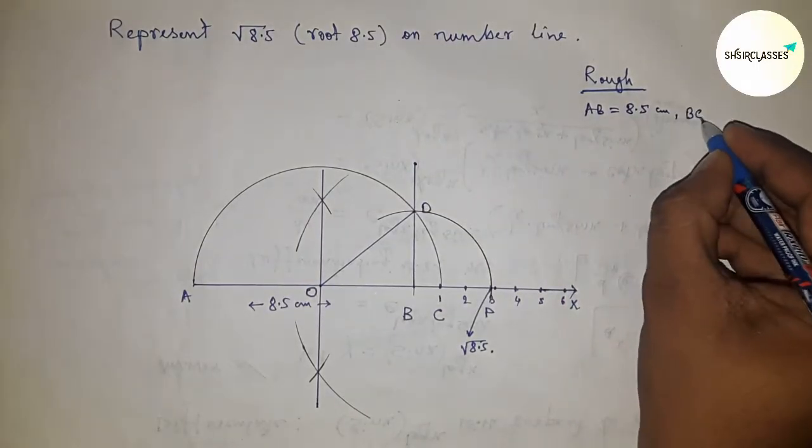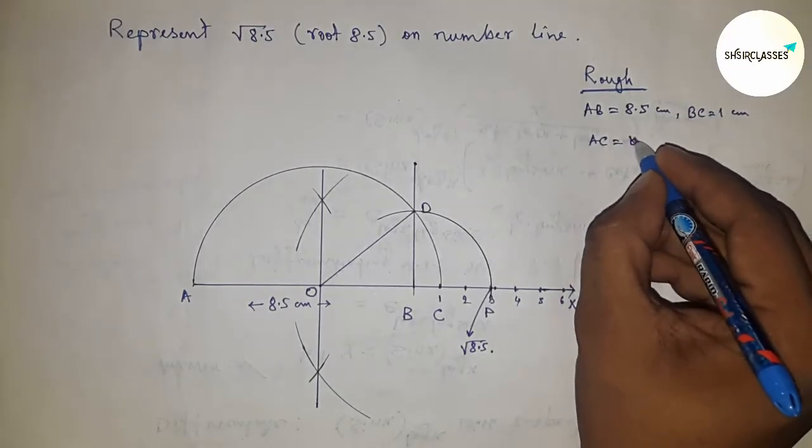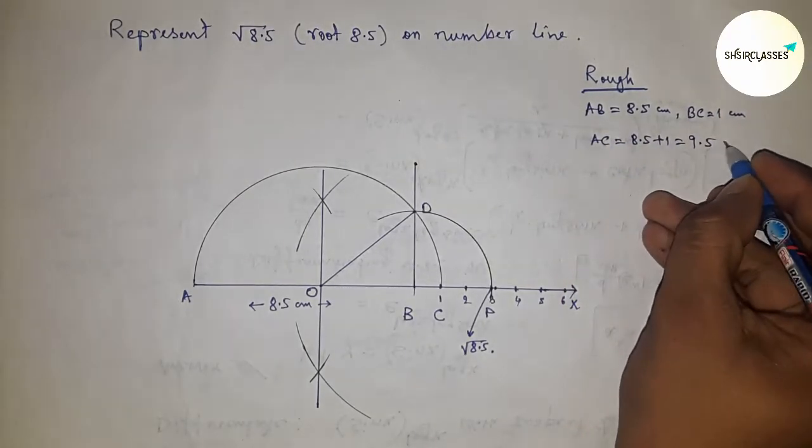First, given AB equals 8.5 centimeters and BC equals 1 centimeter, so AC equals 8.5 plus 1, which is 9.5.